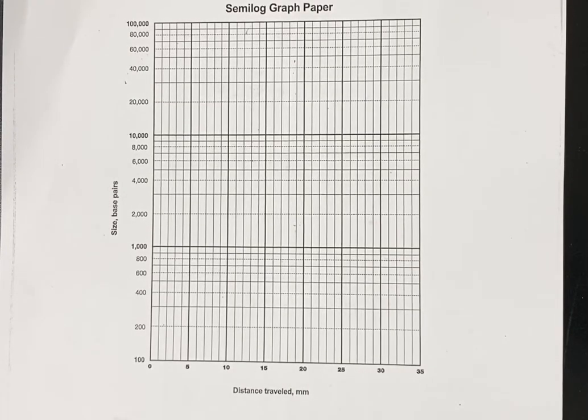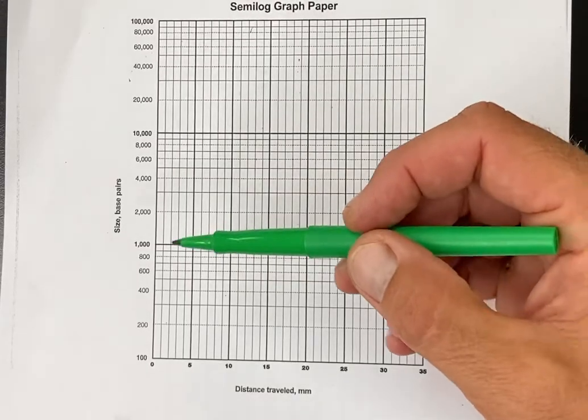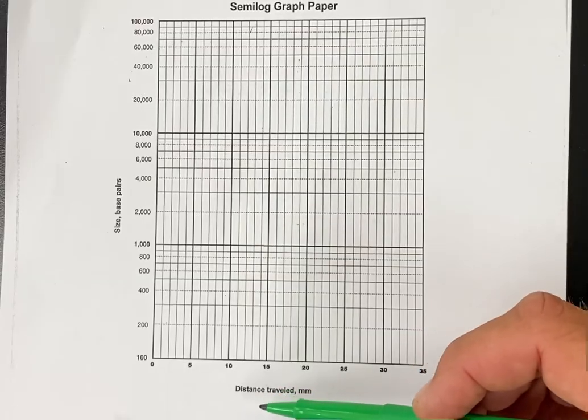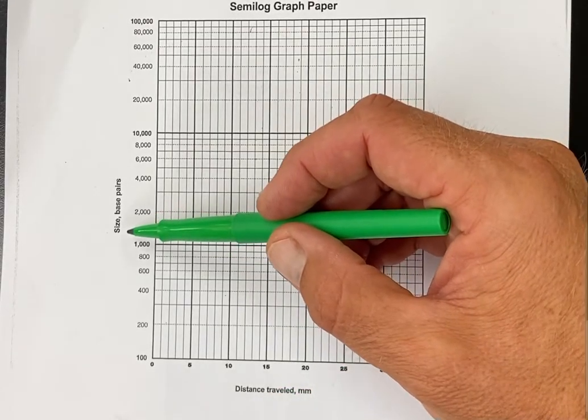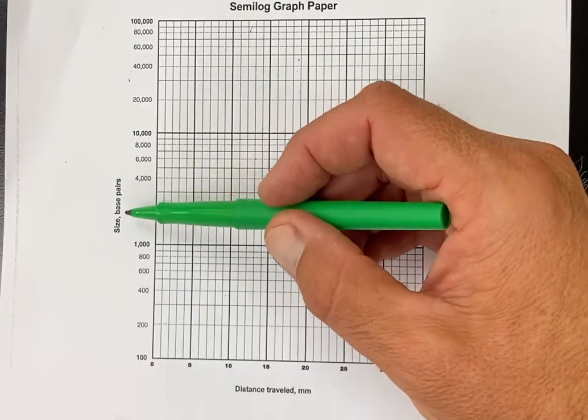All right everybody, here we are. This is Mr. Butcher showing you how to graph DNA gel electrophoresis data on semi-log graph paper. You can see here we have along the x-axis distance traveled in millimeters and on the y-axis size in base pairs, that's how we measure the size of DNA.